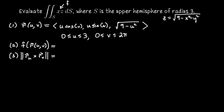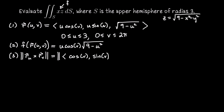Plugging the parametrization into f(x, y, z) = xz, we get the product of the first and third coordinates: u cos(v) times √(9 − u²). For r_u, we take partial derivatives with respect to u: cosine(v), sine(v), and — differentiating √(9 − u²) = (9 − u²)^(1/2) — we get negative u divided by √(9 − u²).